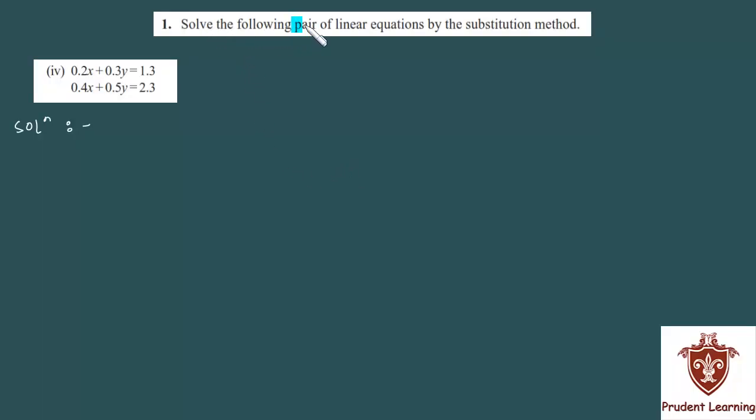Solve the following pair of linear equations by the substitution method. In this section, the given equations are 0.2x plus 0.3y equals 1.3, and 0.4x plus 0.5y equals 2.3.